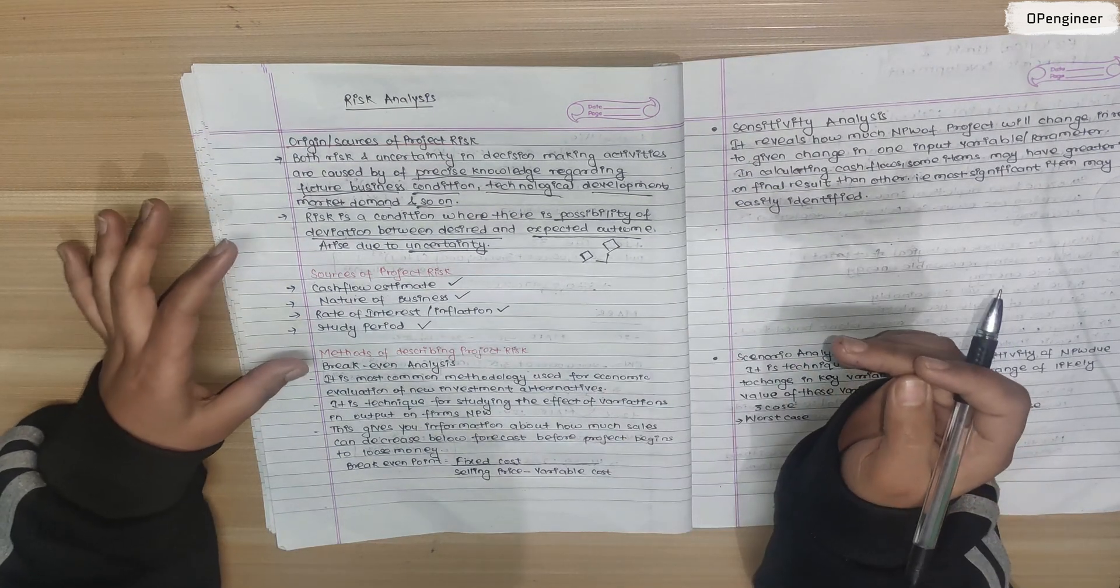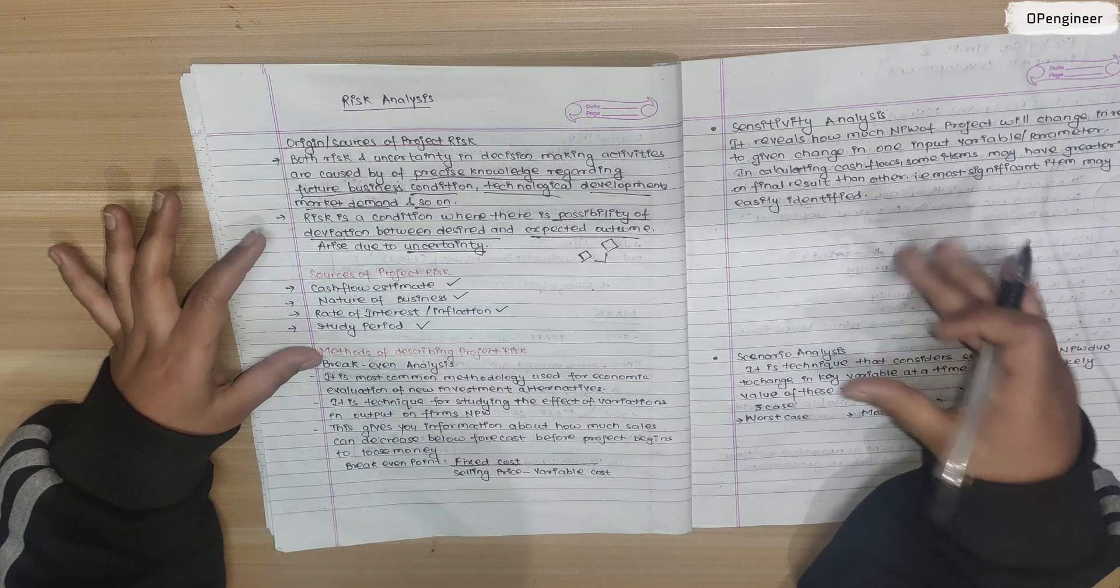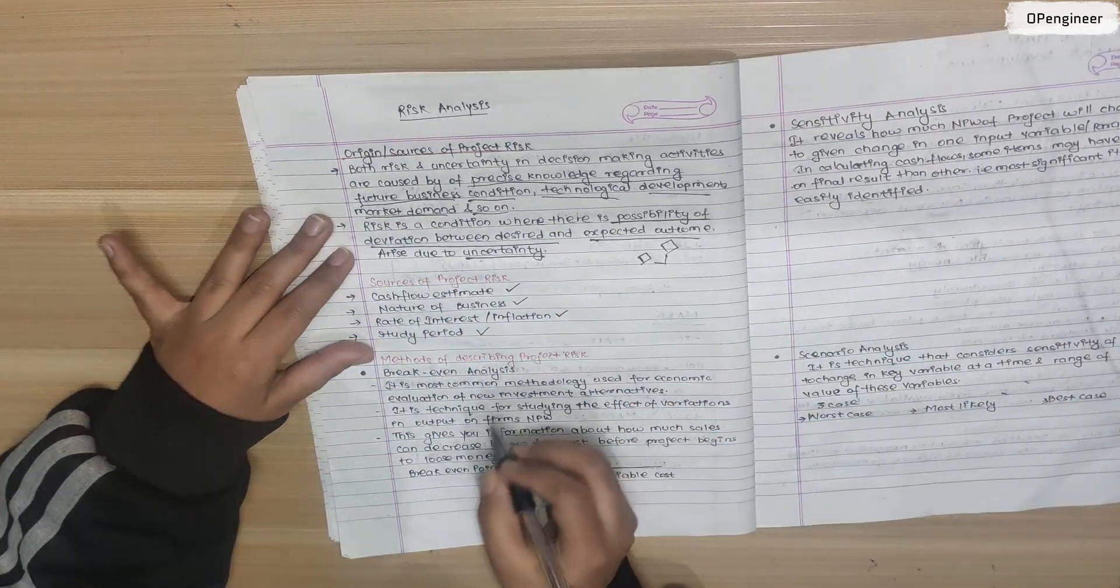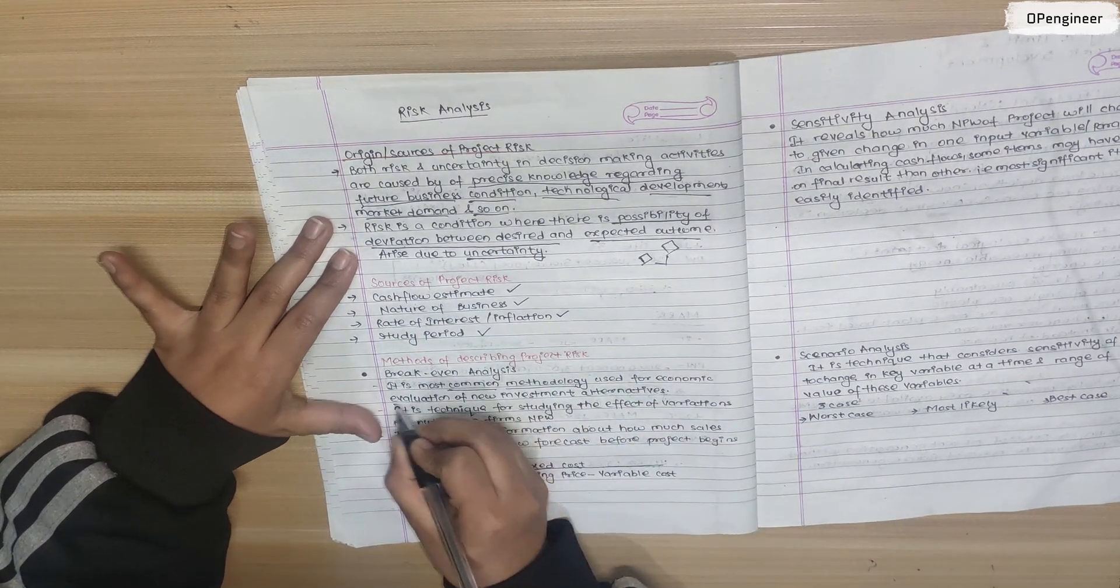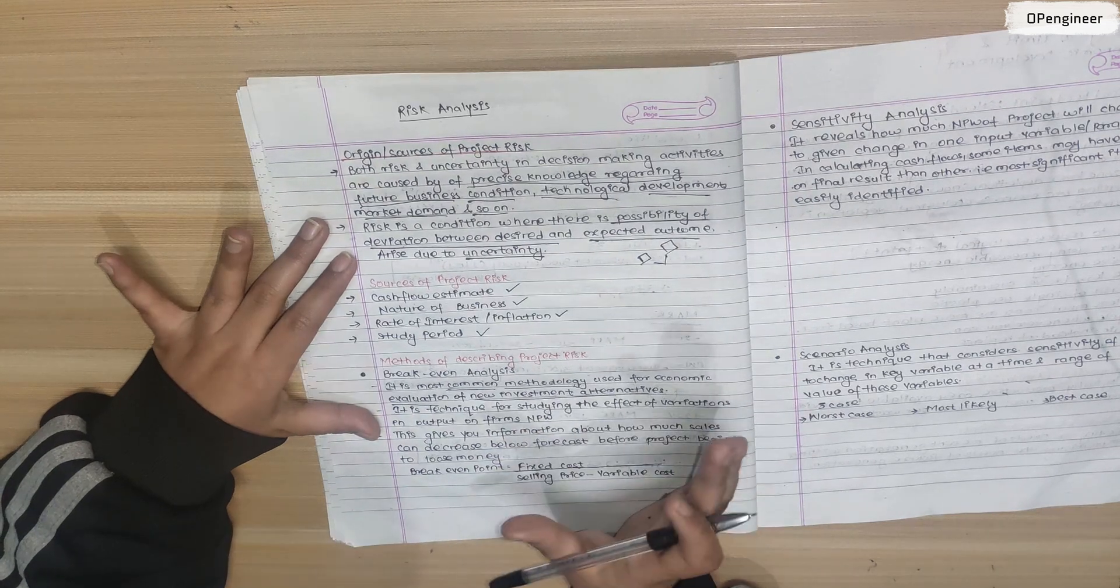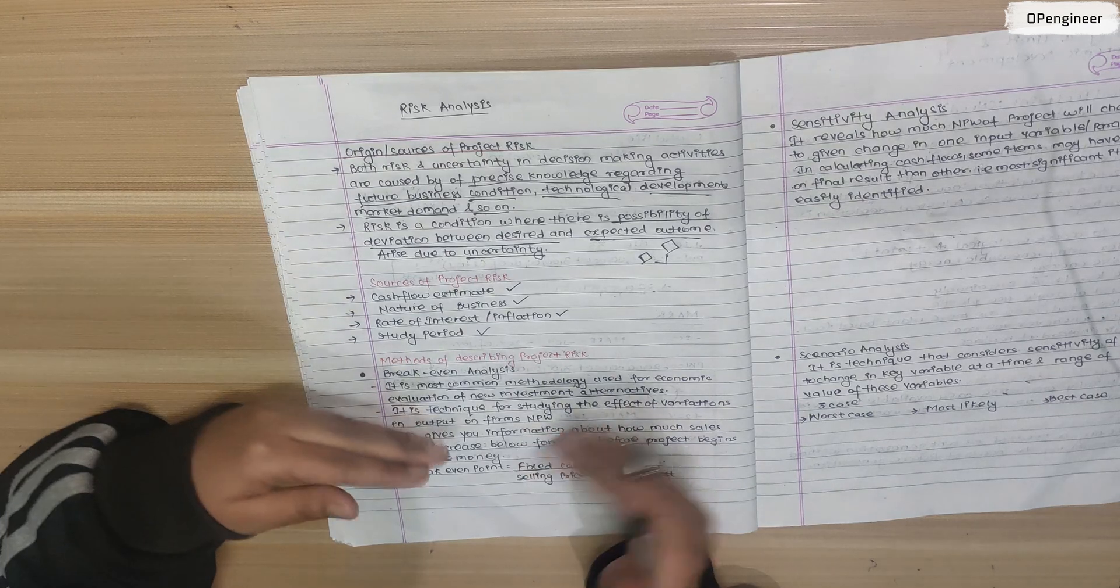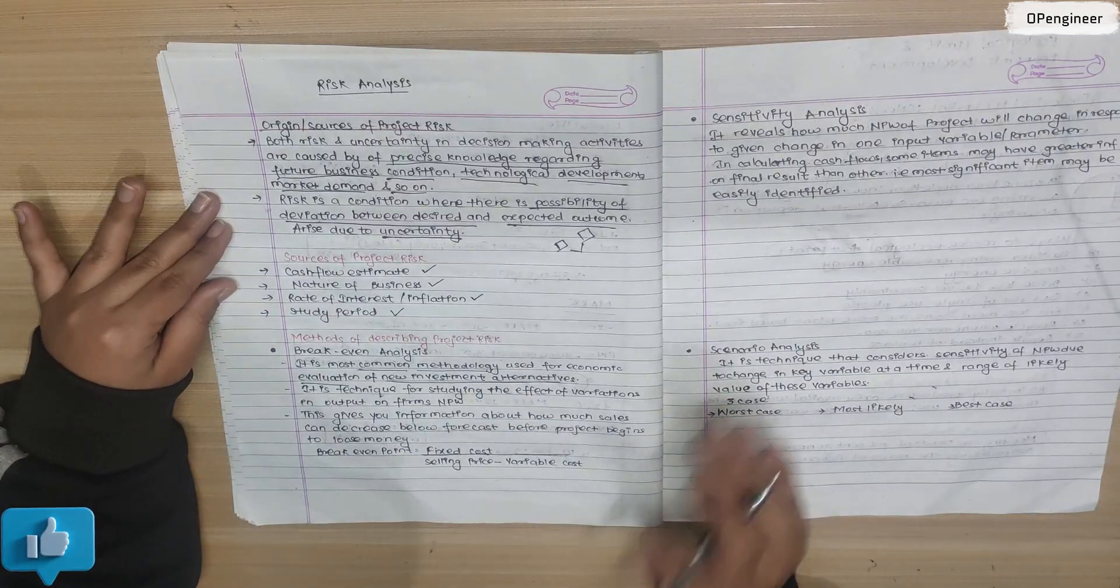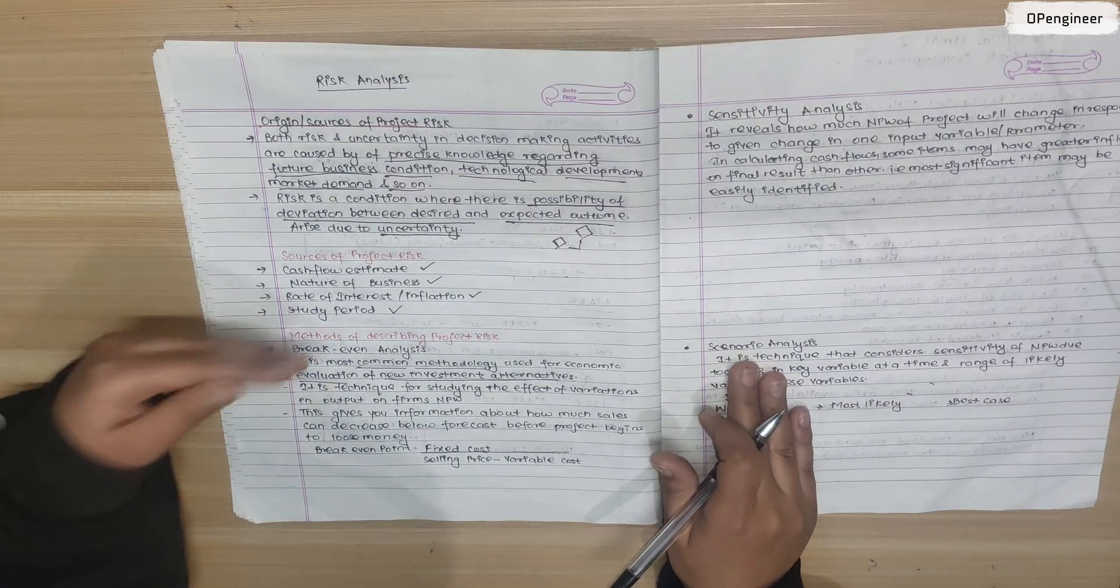There are three methods: break-even analysis, sensitivity analysis, and scenario analysis. Let's start with break-even analysis. It is the most common methodology used for economic evaluation of new investment alternatives. Break-even analysis is the most common method for economic evaluation of new investment.